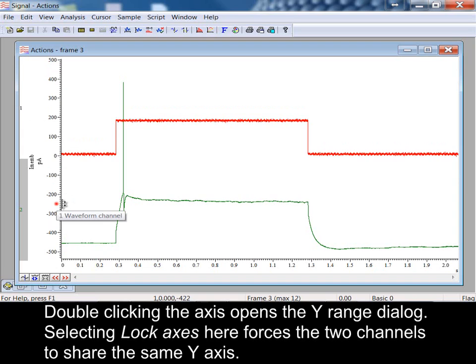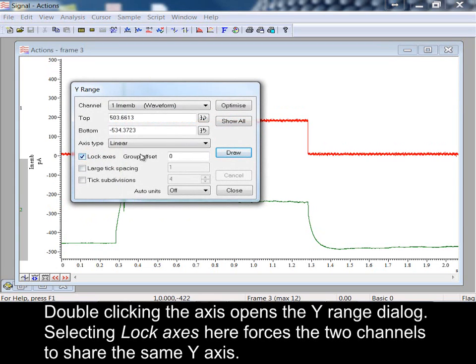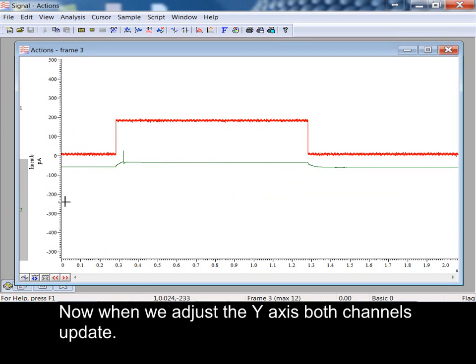Double-clicking the axis opens the y-range dialog. Selecting lock axes here forces the two channels to share the same y-axis. Now when we adjust the y-axis, both channels update.